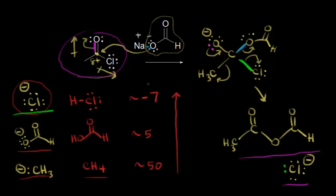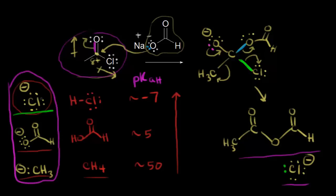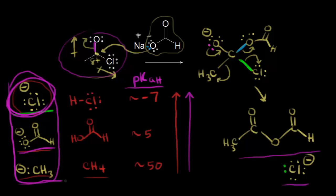In general, we can look at the pKa values for the conjugate acid — we can call these pKaH values, meaning the pKa of the conjugate acid. Thinking about your leaving groups: the lower the pKaH, the better the leaving group. So as you go toward lower pKaH values, you get better leaving groups. The chloride anion is a better leaving group than the formate anion, which is a better leaving group than the carbanion. This is a useful way to think about leaving groups in mechanisms — consider the conjugate acid and its pKa.